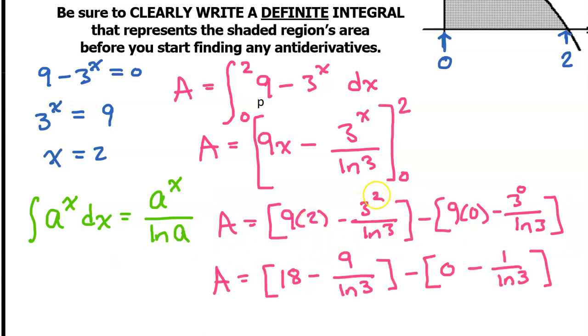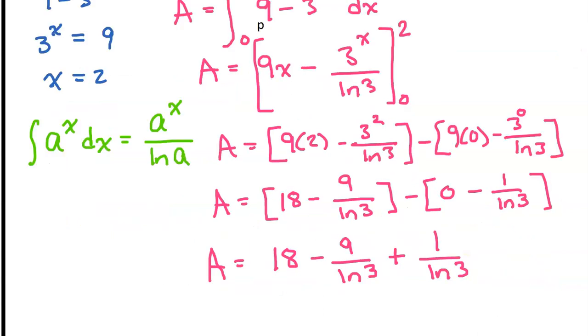9 times 2 is 18. 3 squared is 9. 9 times 0 is 0. 3 to the 0 power is 1. So we have this minus a negative is a positive. These two are like terms. Negative 9 plus 1 is negative 8.